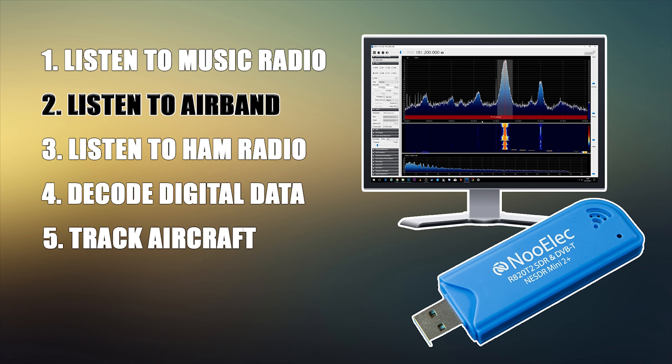Another cool thing you can do with an SDR receiver is listen to air band. Air band is the allocation of frequencies which aircraft transmit their audio on. It's normally broadcasting AM — Amplitude Modulation — and it's anywhere between 108 and 135 megahertz. Let's go ahead and have a listen to see what it sounds like.